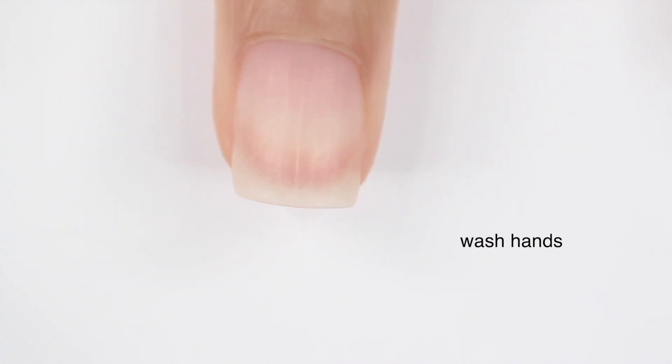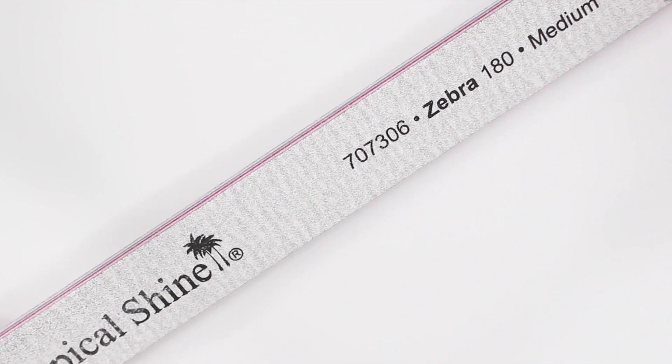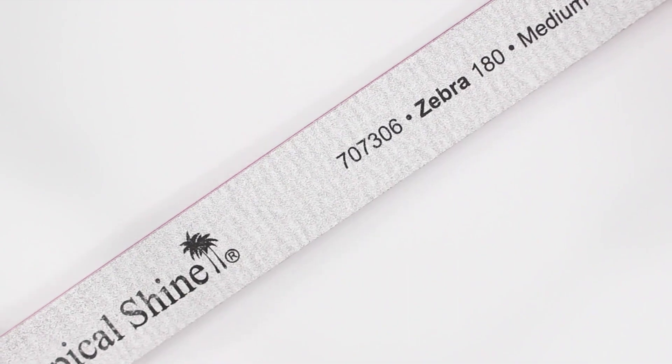Here is what my nail is looking like. Already so much better after that one step. So the next thing I do is move into shaping and filing my nails. So this is going to look a little bit different for everybody, but I like to use a 180 grit nail file for this.